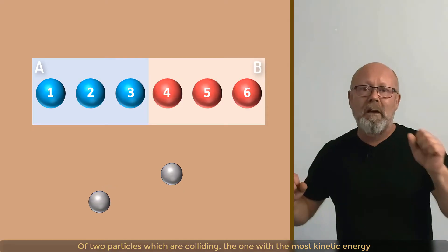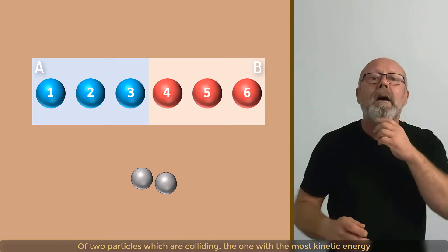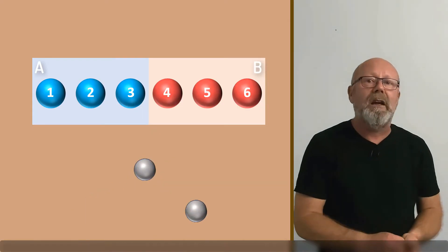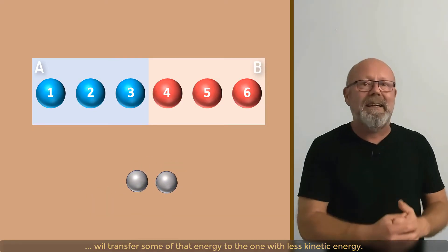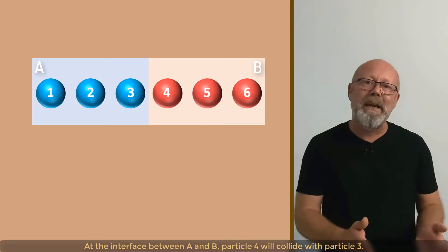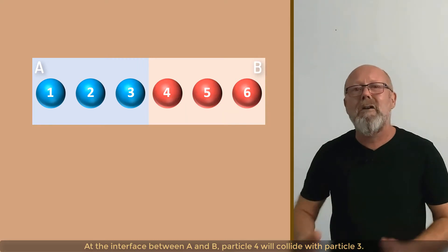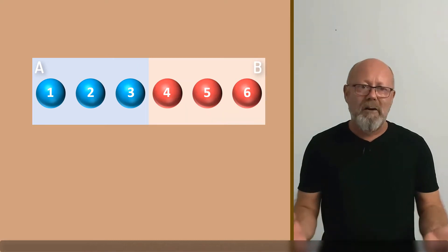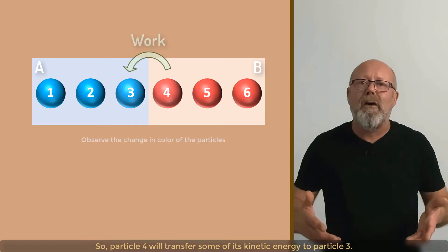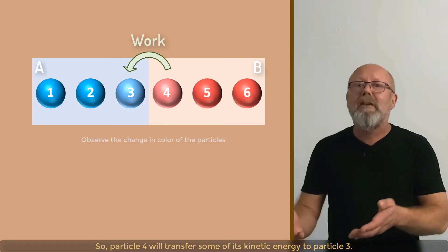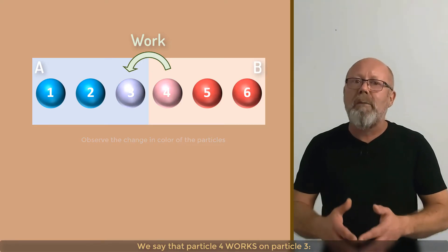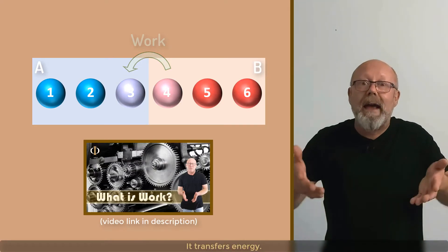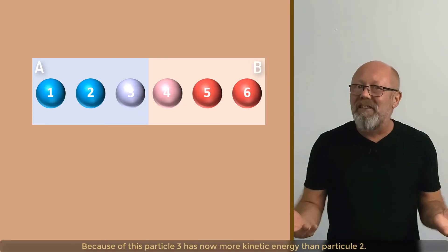Now, of two particles which are colliding, the one with the most kinetic energy will transfer some of that energy to the one with less kinetic energy. At the interface between A and B, particle 4 will collide with particle 3. So, particle 4 will transfer some of its kinetic energy to particle 3. We say that particle 4 works on particle 3. It transfers energy.